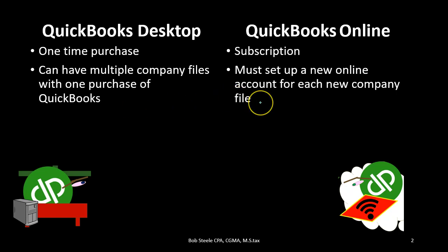With the online version, you can't as easily start a new company file to test things out or enter data for a new company. Also, if you're running a bookkeeping system and doing all the bookkeeping yourself, you could set up a much cheaper system with the desktop version by having multiple files. With the online version, each new file would typically require a new payment.